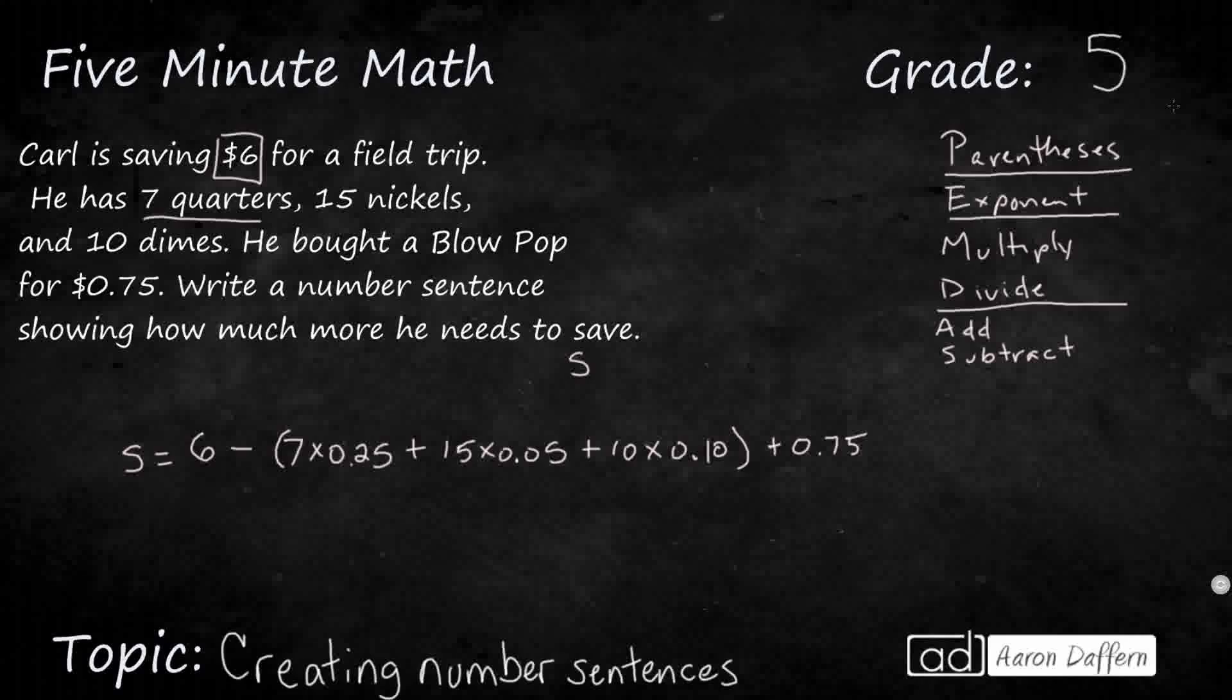So this is how we can use the order of operations to write a number sentence, and if we needed to, we would solve this. We would do the parentheses. We would simplify each of these first, add those together with the 75, and then subtract from the 6, and that would be how much more he needs to save.